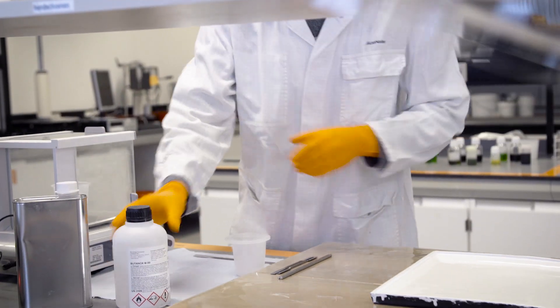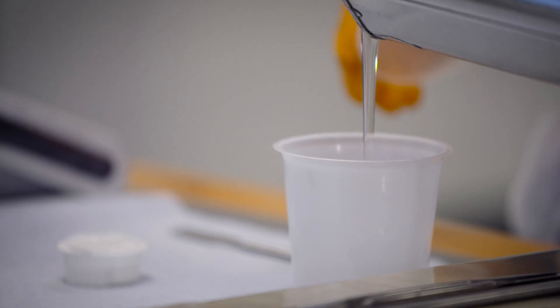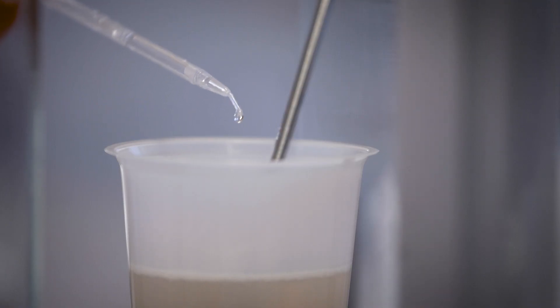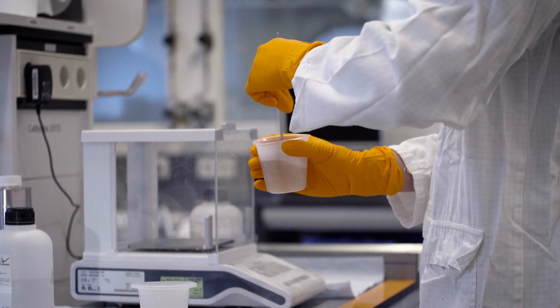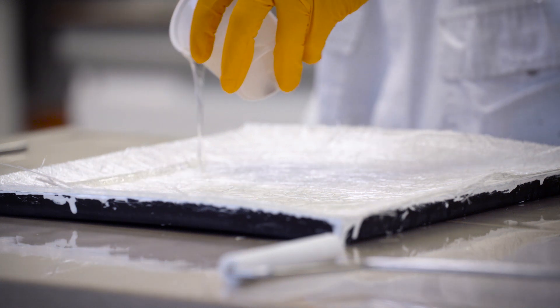To make a composite, liquid unsaturated polyester resin is mixed with an organic peroxide. This mixture is brought into a mould with fillers or reinforcements such as glass fibers.